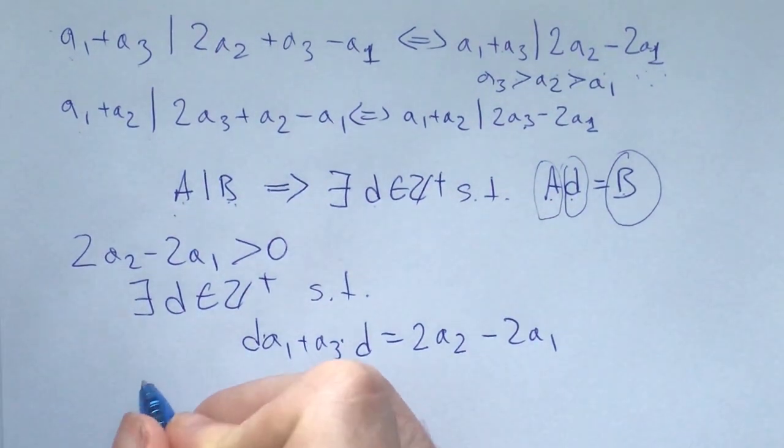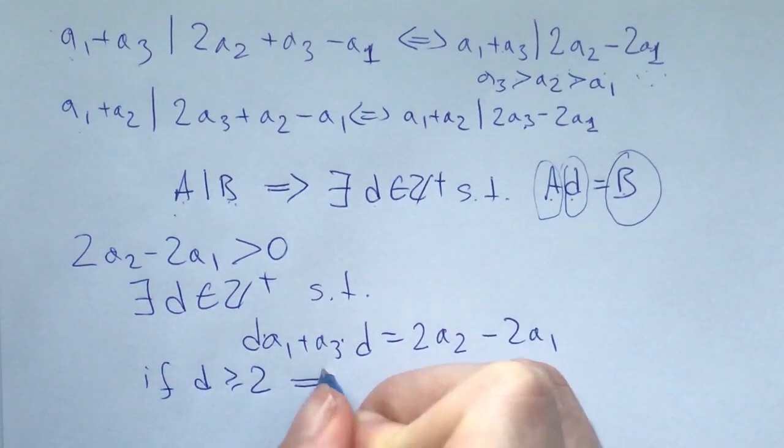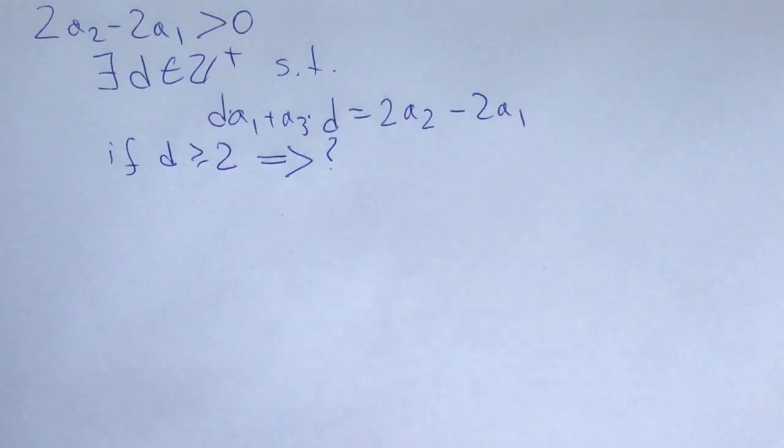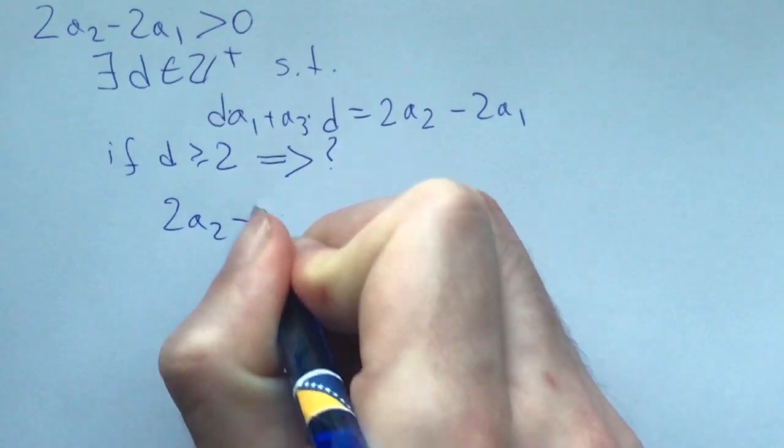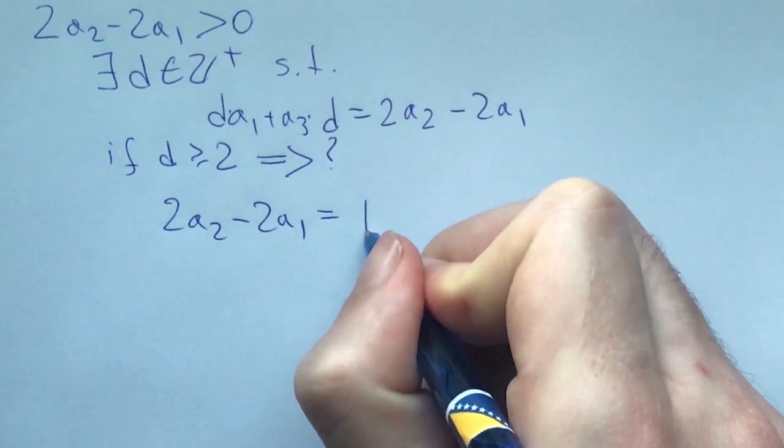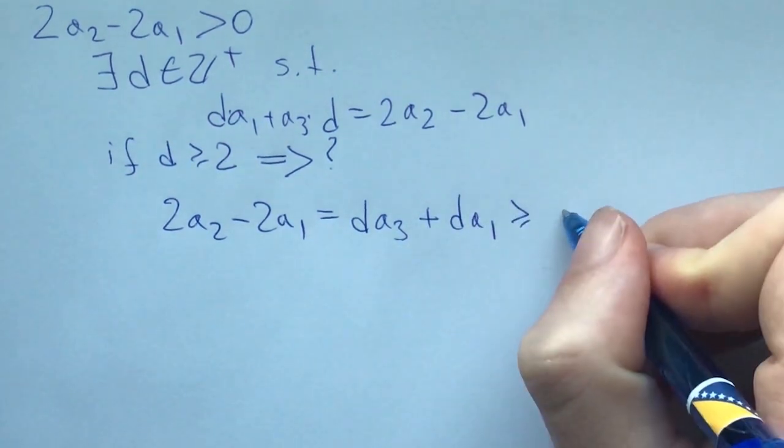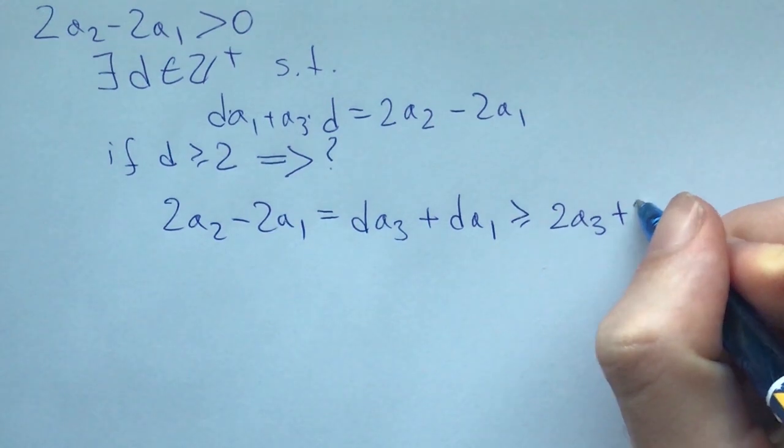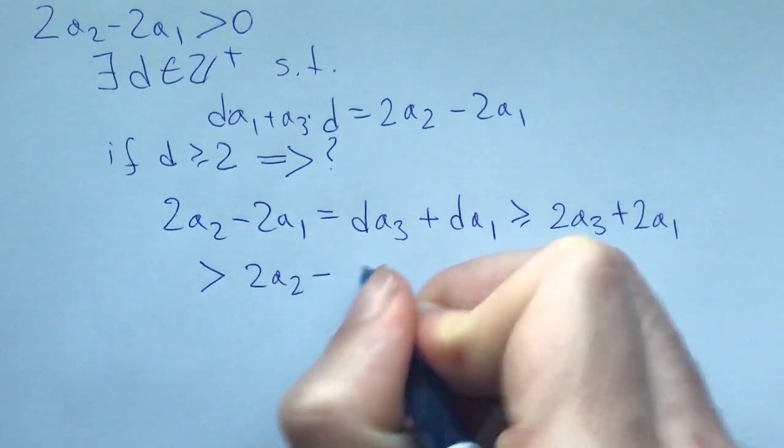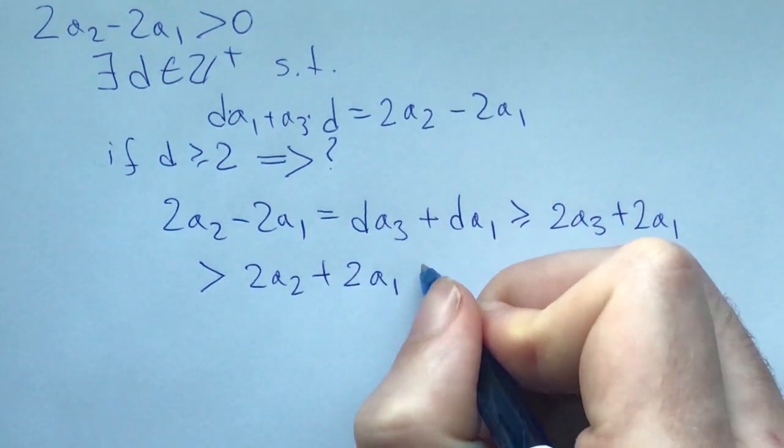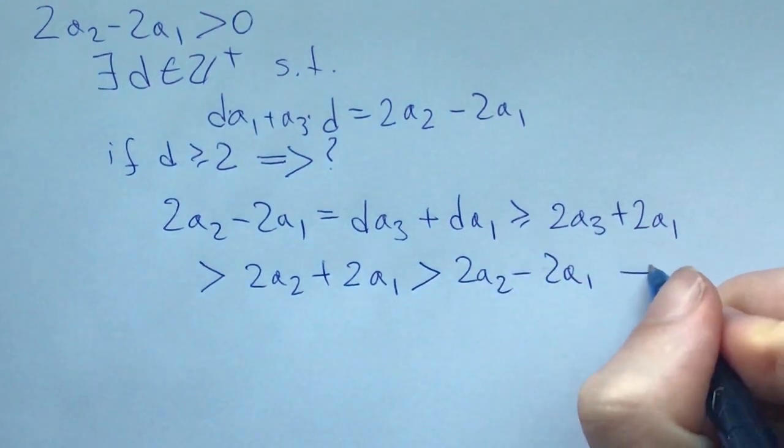Because a2 - 2a1 is greater than zero, there exists a positive integer d such that (a1 + a3)·d equals 2a2 - 2a1. Now if d was greater than or equal to 2, what would we get? We'd get that 2a2 - 2a1 = d(a3 + a1) which would be greater than or equal to 2a3 + 2a1, and this would be greater than 2a2 - 2a1, which would be a contradiction.